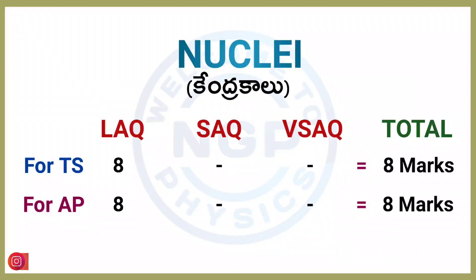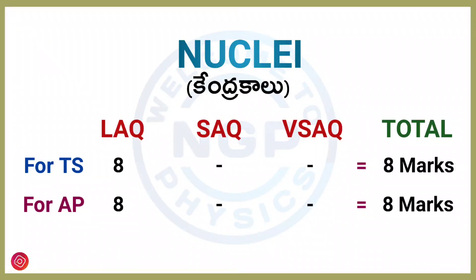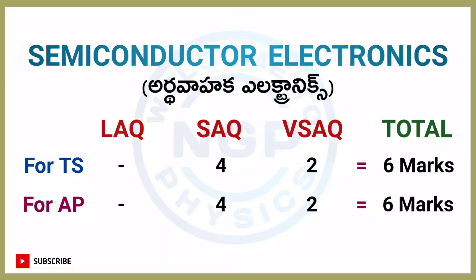Next chapter: Nuclei. For both AP and TS students, two VSAQ questions. Chapter weightage is 8 marks.